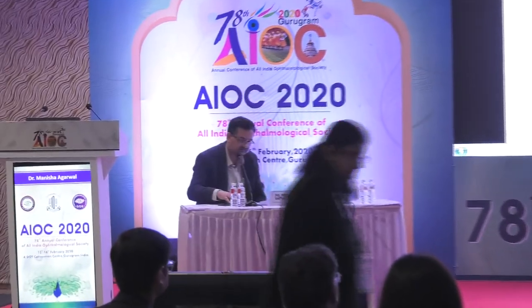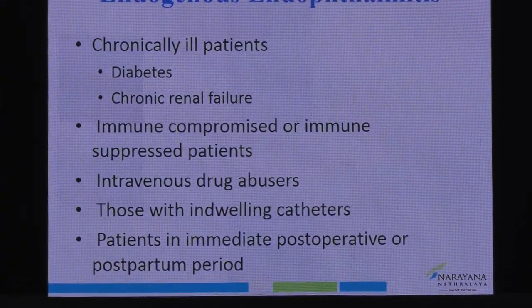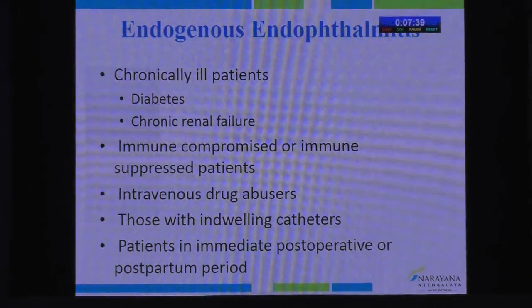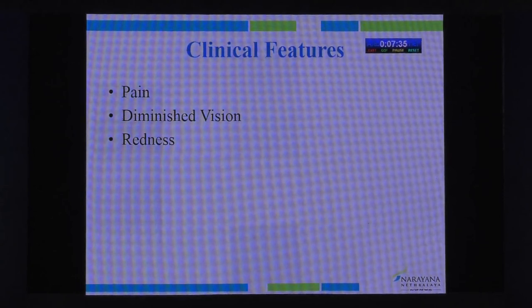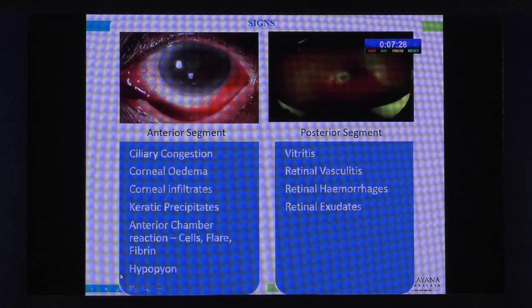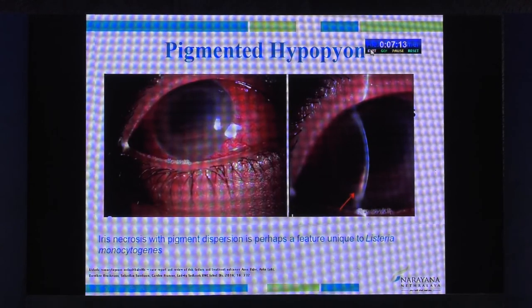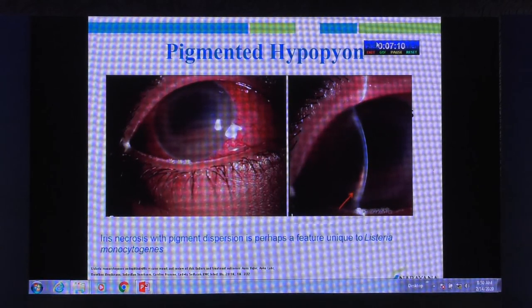We'll have the last talk from Dr. Padmamalini on endogenous endophthalmitis. Good morning. Endogenous endophthalmitis is defined as an intraocular infection resulting from hematogenous microbial spread — extremely rare in healthy populations and commonly seen in chronically ill patients. Uncontrolled diabetes, chronic renal failure, immunocompromised states, intravenous drug abuse, and indwelling catheters are predisposing factors.